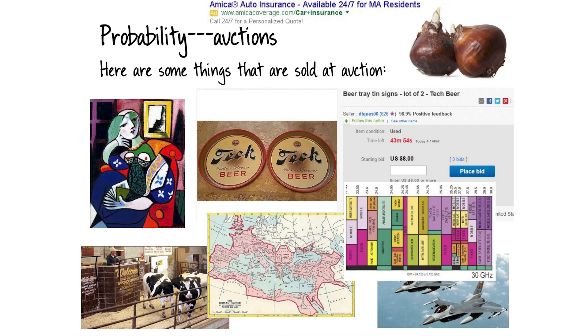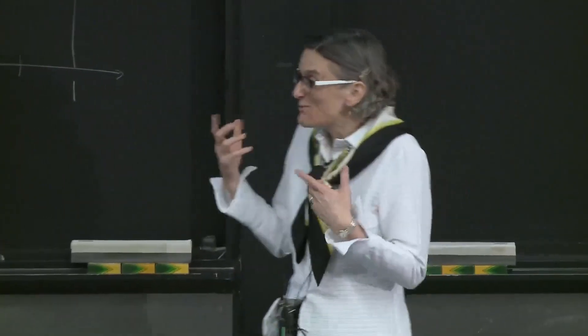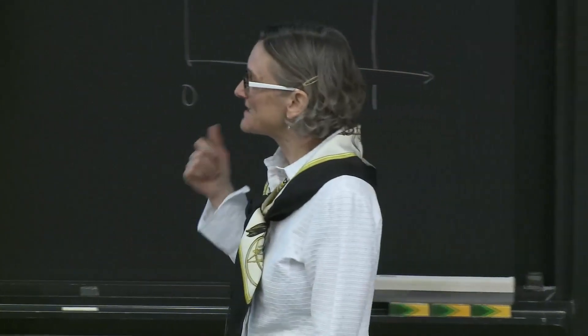Livestock in the US is typically sold at auction before going to the butcher shop. Radio spectrum is another example — it used to be controlled by the government and given away for free to radio and television stations, typically with conditions like programming requirements for the public good. At some point, the US government decided they were sitting on a gold mine and started auctioning off spectrum, which is now common practice among many countries.